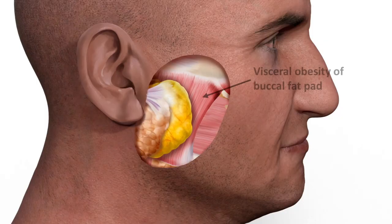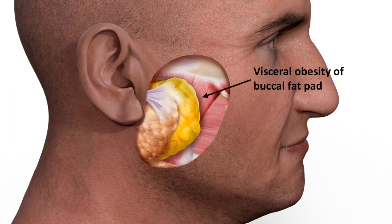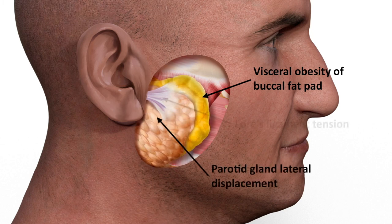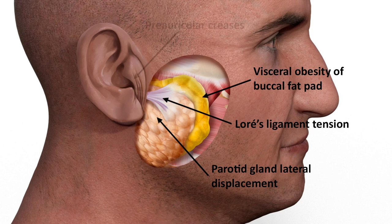In visceral obesity, the size of the deep cheek fat of the buccal fat pad increases, causing lateral displacement of the parotid gland and Lohr's ligament tension. This results in skin redundancy of the cheek and pleating of the skin in front of the ear, creating the anterior tragal line and preauricular vertical creases. These are skin folds, not true creases.